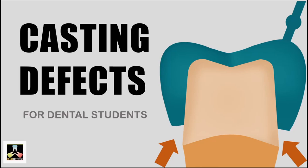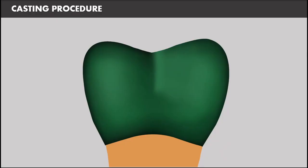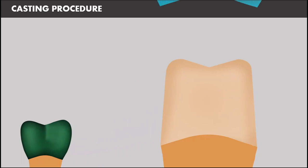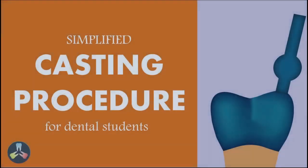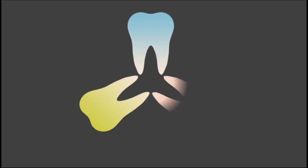We all know that a wax pattern made over the die is converted into a metal with the same precision as that of wax pattern by casting procedure, preferably with the lost wax technique. A basic knowledge about casting procedure is essential to understand the casting defects. I would recommend to watch the presentation on casting procedure before attending this presentation on casting defects.